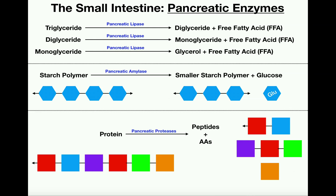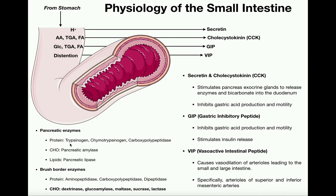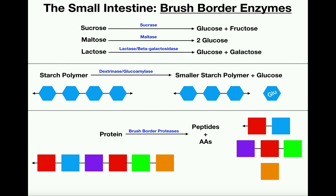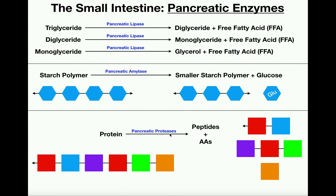These proteases take a protein or peptide and break it into smaller pieces, just as the brush border enzymes do. We can't absorb larger proteins or peptides — they have to be either free amino acids, a dipeptide, or at most a tripeptide. Anything larger than a tripeptide, there's really no hope of absorbing.